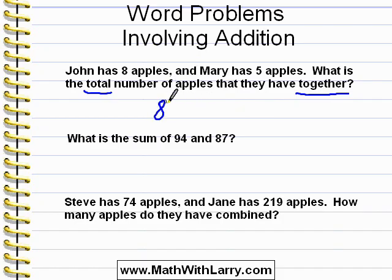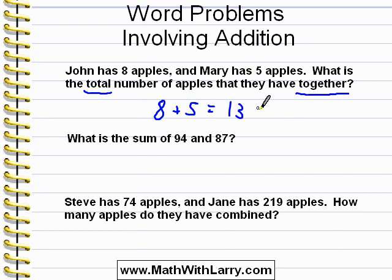In this problem, the way to get the answer is by adding. We'll simply do eight plus five, and we'll get thirteen as our answer. Of course, this may seem very basic, but later on we'll move on to much more complicated word problems.